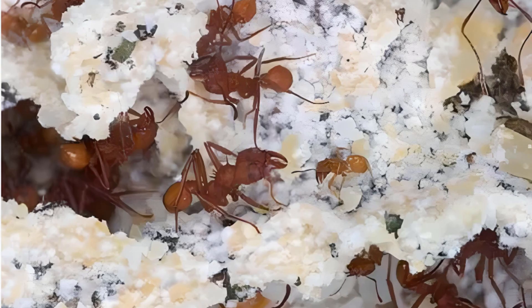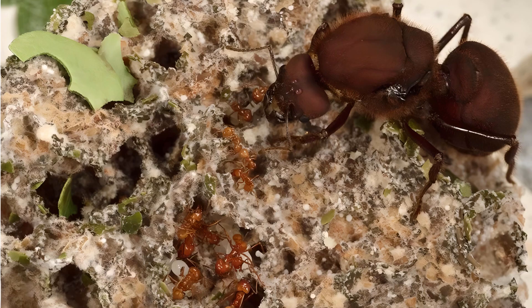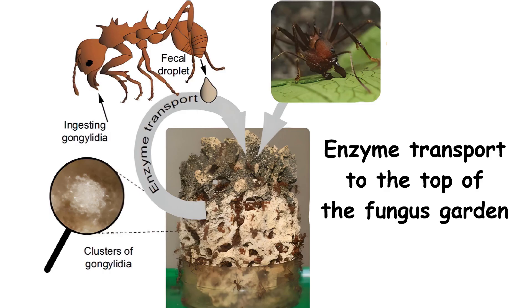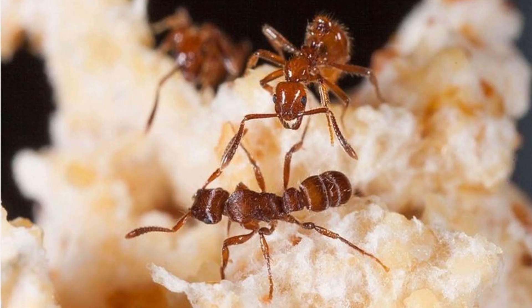The minims pick up fungus hyphae and plant them on fresh pulp. The fungus produces nutrient-rich structures on hyphal tips called gongolidia, which are eaten by the ants and fed to the ant larvae. The ant faeces contains enzymes that are spread on the fresh leaf litter to start the digestion process.